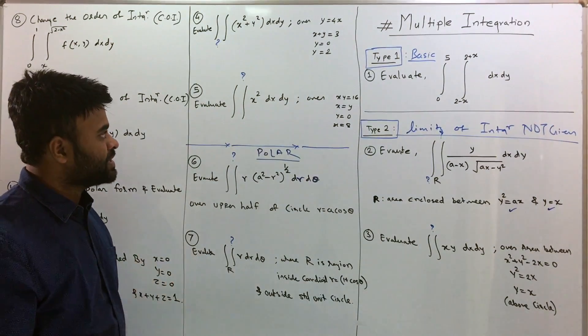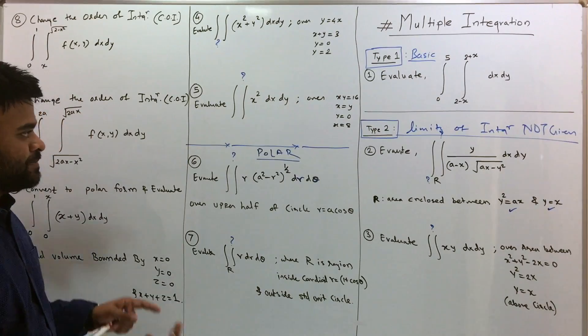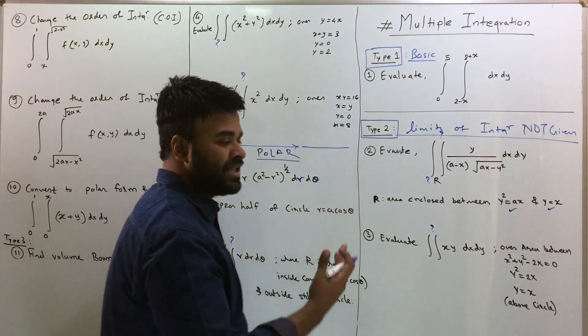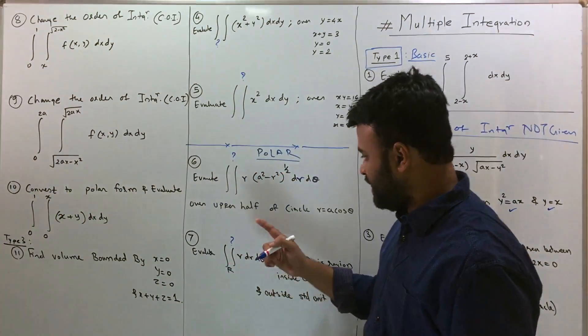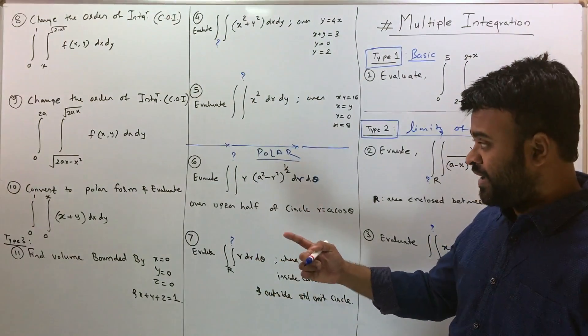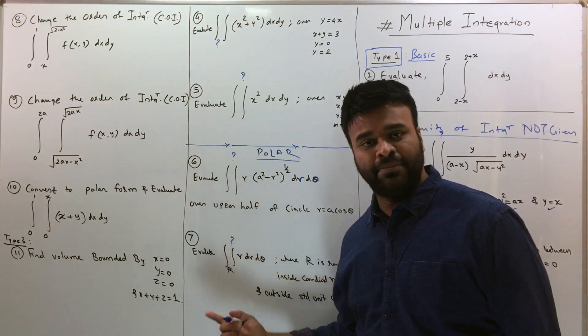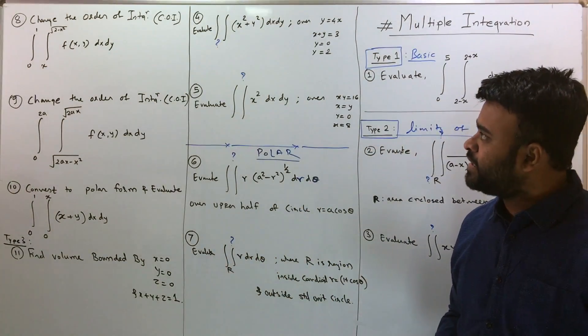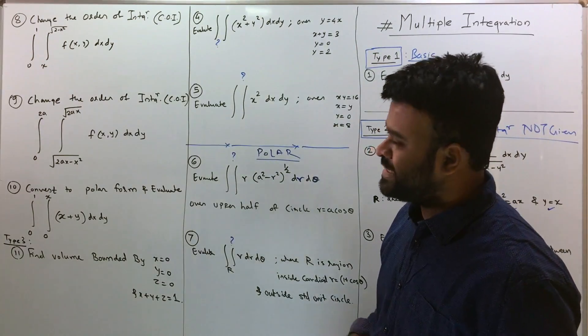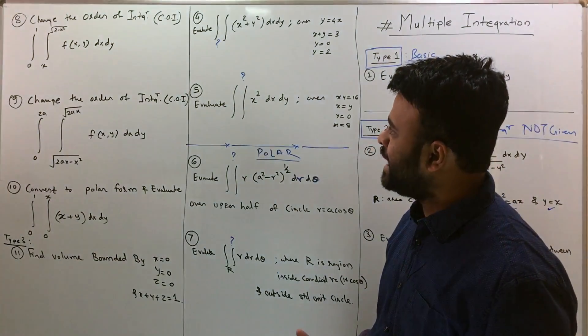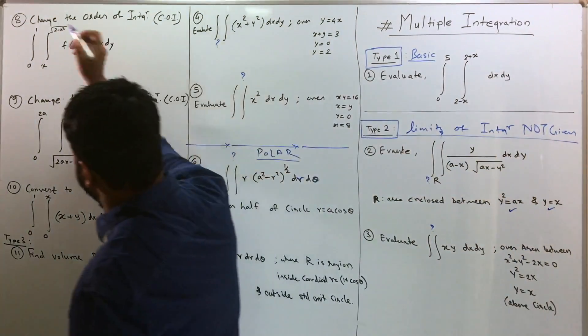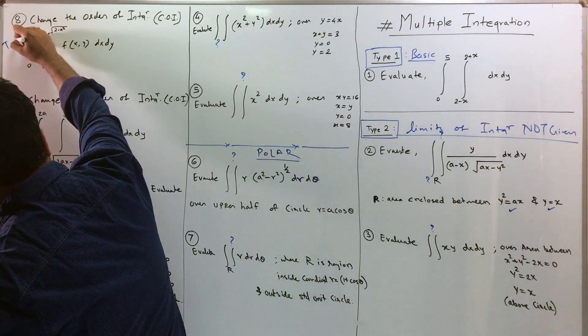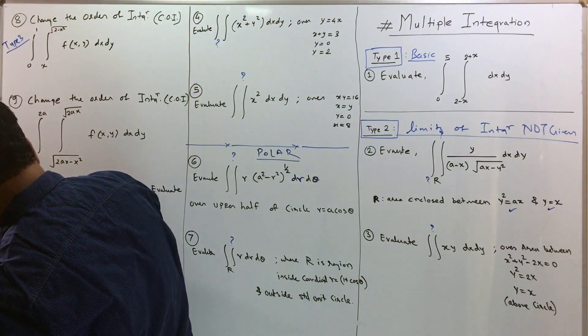Question number 7 is also a question of polar form. So this is what I'm still going to call them type 2 because the limits are not given, now over here as well, the limits are not given and you're supposed to find those limits. Well, that's till question number 7. And now if you see question number 8, it's a different question altogether, different type of question. Well, I should call this type 3.